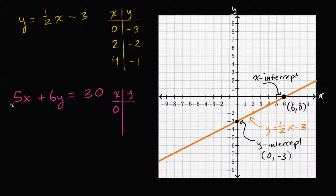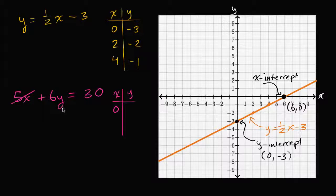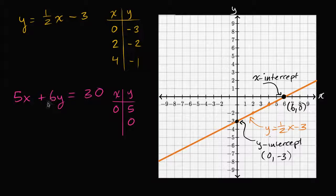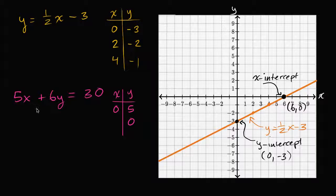When x is equal to zero, this becomes six y equal 30, and so six times what is 30? Well, y would be equal to five. So when x is zero, y is five. And what about when y is zero? Well, when y is zero, that term is going to be zero, and you have five x is equal to 30 — then x would be equal to six.